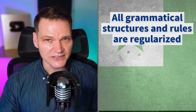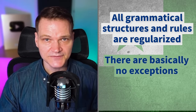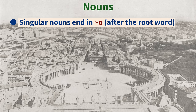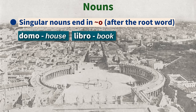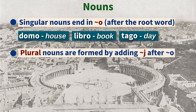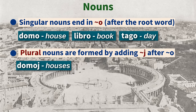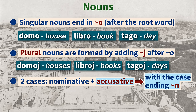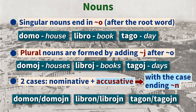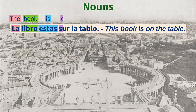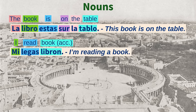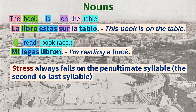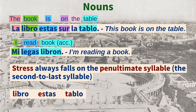What makes it so simple? All grammatical structures and rules are regularized with basically no exceptions. Singular nouns end in -o after the root: "domo" (house), "libro" (book), "tago" (day). Plural nouns are formed by adding -j (pronounced Y) after the -o: "domoj" (houses), "libroj" (books), "tagoj" (days). Nouns have two cases — nominative with no special ending, and accusative (usually for the direct object) which adds -n. "Domon," "domojn," "libron," "librojn," "tagon," "tagojn." "La libro estas sur la tablo" — The book is on the table. "Mi legas libron" — I'm reading a book. The stress in words with multiple syllables always falls on the penultimate syllable: libro, estas, tablo, legas, libron.